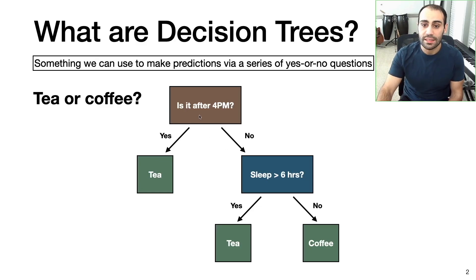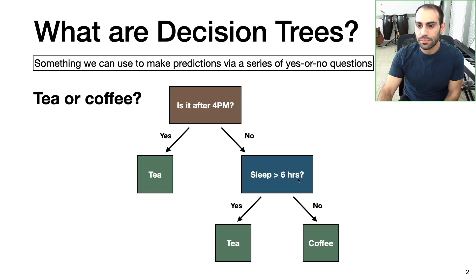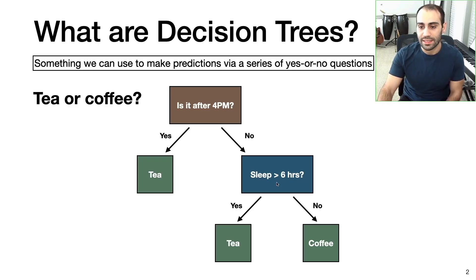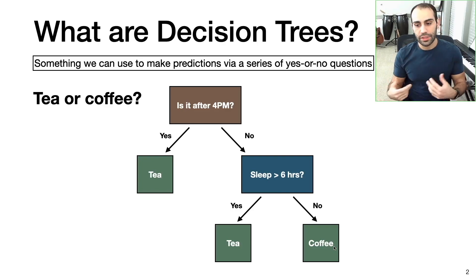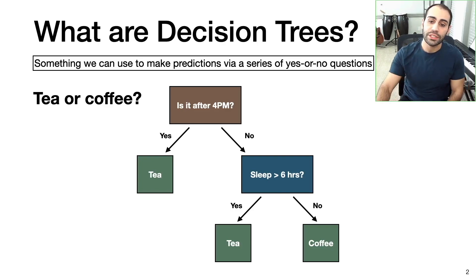So let's say yes, it is after 4 p.m. — then our answer is I will drink tea. But if the answer was no, we would follow this arrow and end up at another yes or no question. This one asks if I got more than 6 hours of sleep last night. If yes, we go with tea once again. But if no, we're going to go with coffee. This is a very simple way to make predictions using just 2 pieces of information.